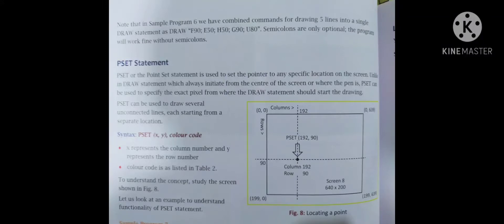The syntax for PSET is: PSET (X, Y), color code. X represents the column number and Y represents the row number. The color code is as listed in Table 2. Study the screen shown in figure 8 to understand the concept.